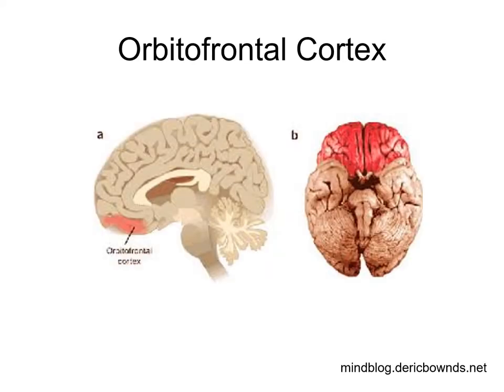Let's think about what the orbital frontal cortex does in humans. We already know that depriving an animal of social stimulation can affect development of the orbital frontal cortex. Before discussing its function, we should look at one of the most famous clinical cases of what happens to a person without a properly functioning orbital frontal cortex.